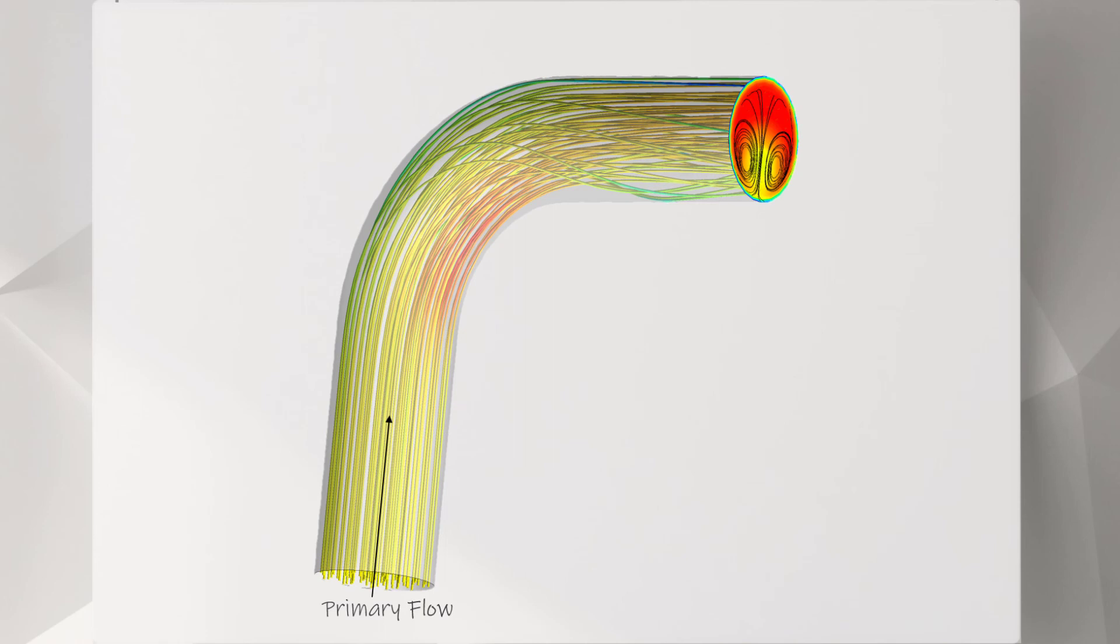Looking at a set of streamlines through the bend, you can see that the flow separates from the most internal side. This is because there, the curvature radius is the smallest for the geometry. The flow separation then causes additional effects.